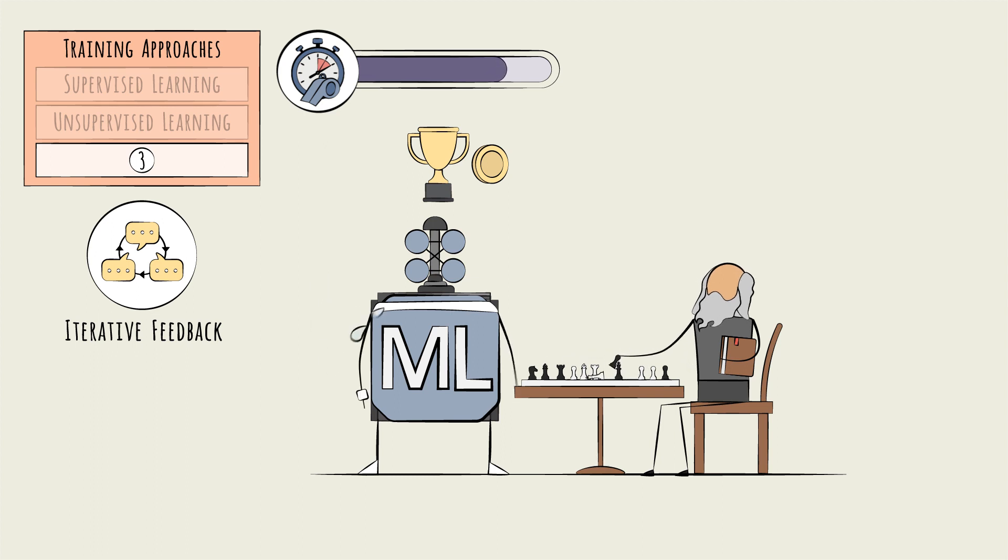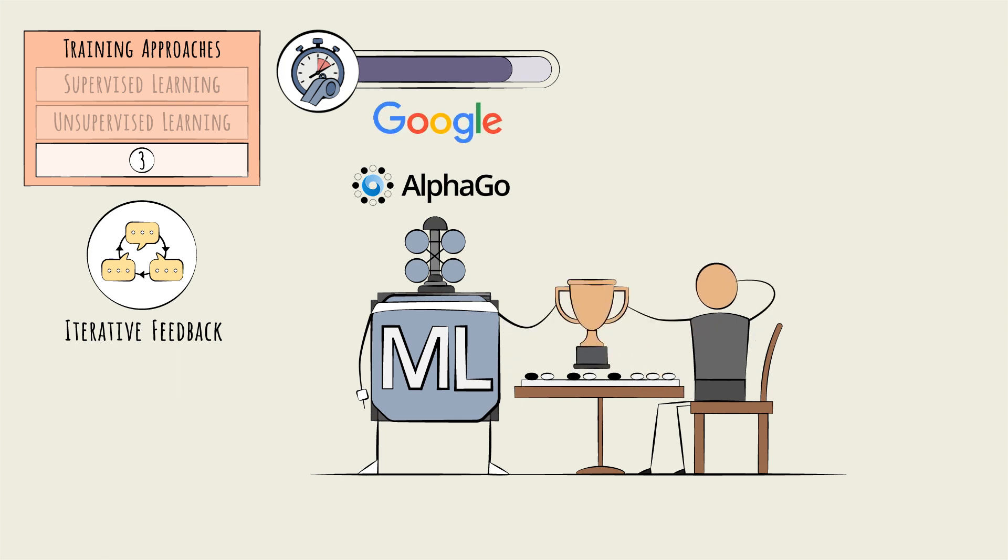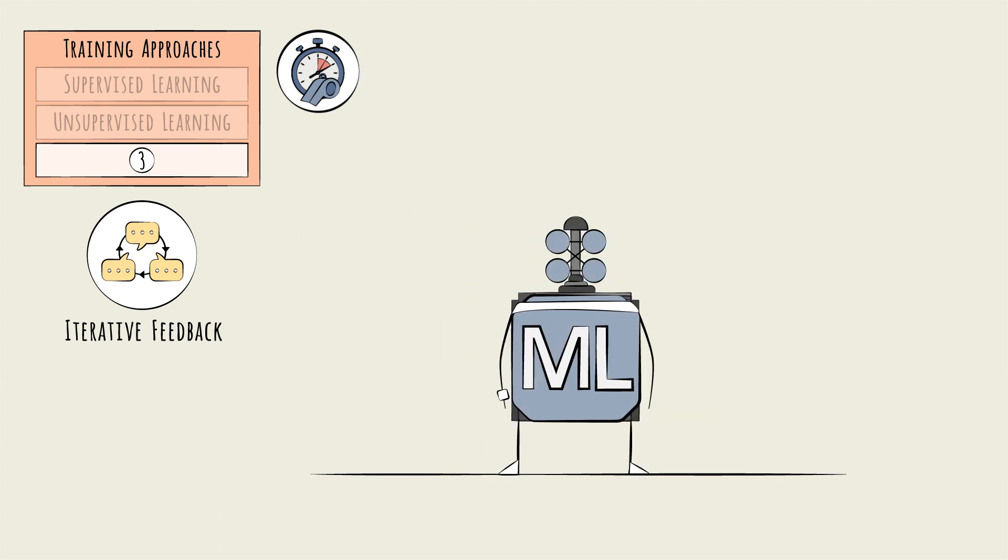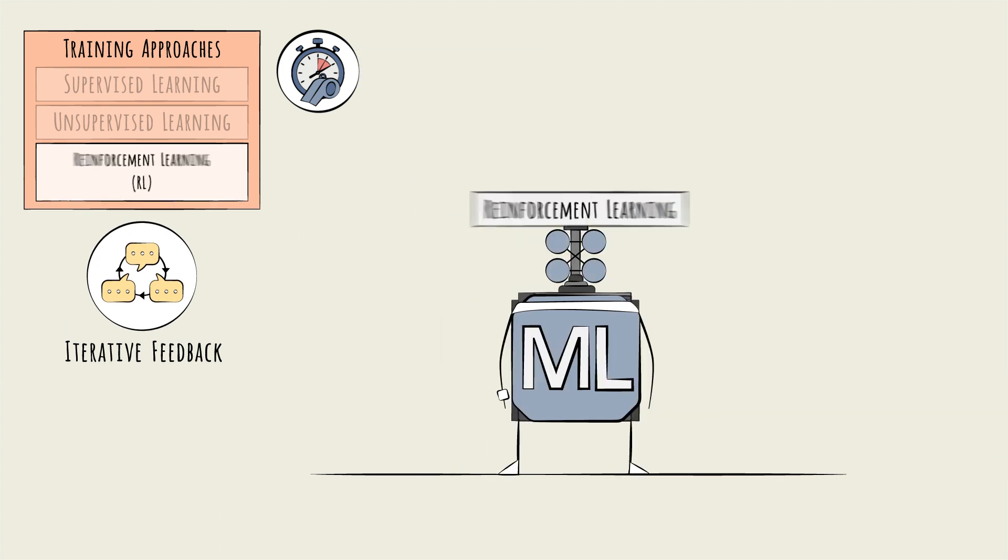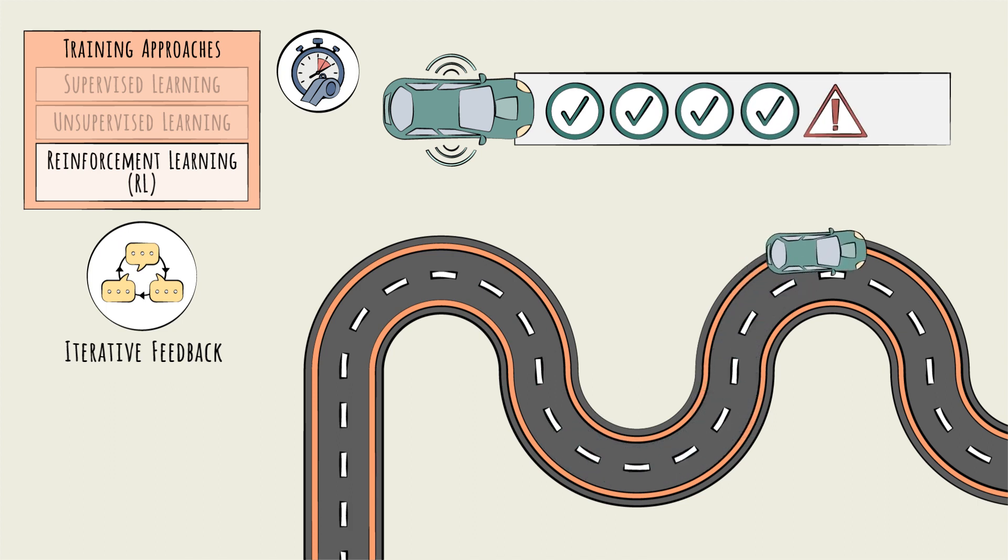When it loses, you can do the opposite. Practice makes perfect, as they say. This is exactly the approach taken by AlphaGo, an AI model trained by Google that beat the world's best player of the board game Go in 2016. This third training approach is called reinforcement training, or RL. Self-driving cars also use RL. When the car maneuvers successfully, a reward is applied. When it moves dangerously, a penalty.